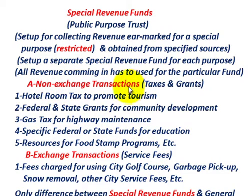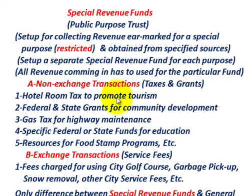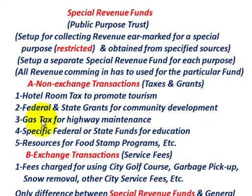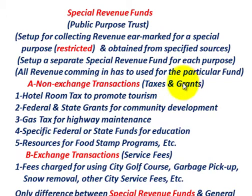For non-exchange transactions, an example would be a hotel room tax collected to promote tourism — the funding source is the hotel room tax and the restricted use is promoting tourism. We could also have federal and state grants for community development, a gas tax for highway maintenance, a federal or state grant for education, and resources for a food stamp program. Non-exchange transactions are specific taxes collected for specific uses, or specific grants received from federal or state sources for a specific use.